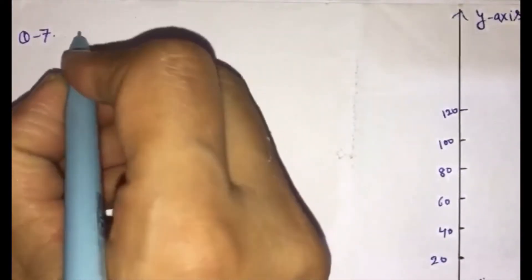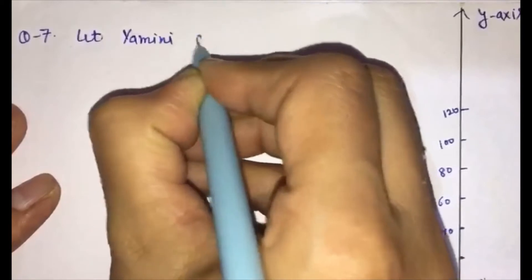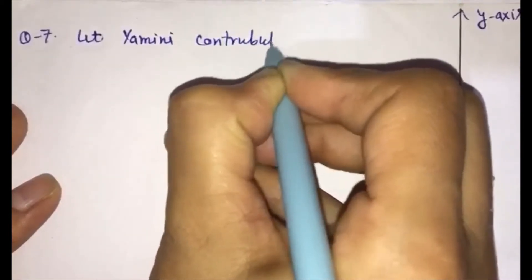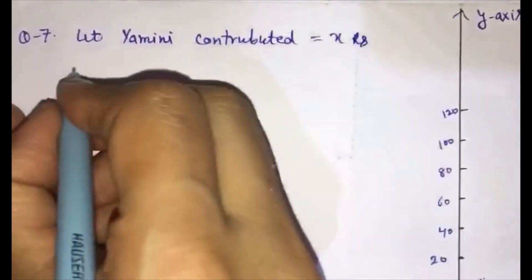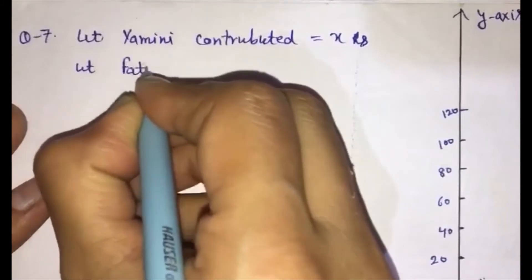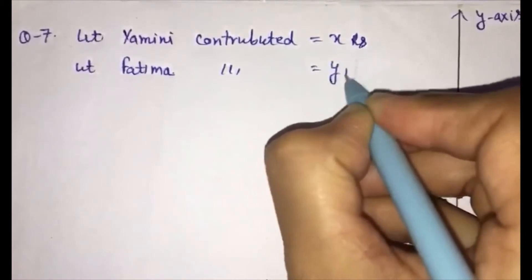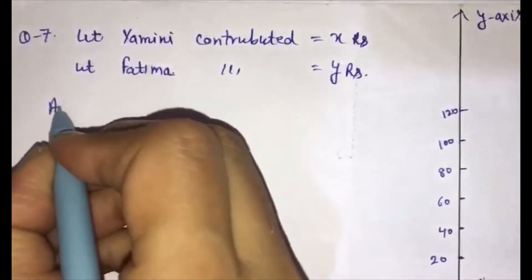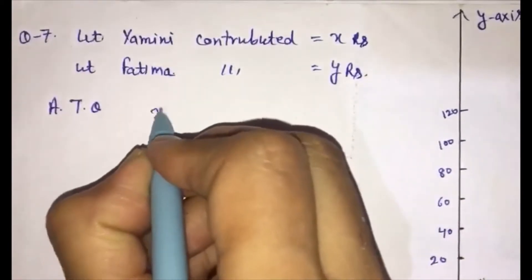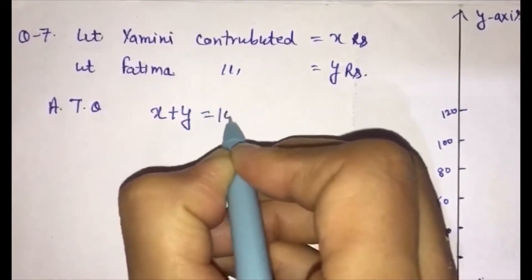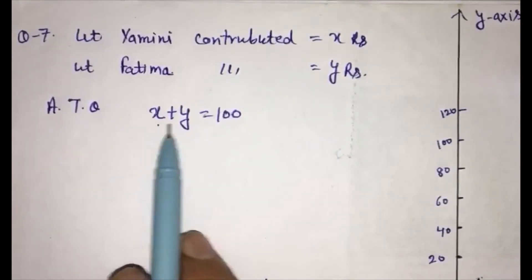Let Yamini's contribution be Rs. X, and let Fatima's contribution be Rs. Y. According to the question, both contribute equally together, so we get the linear equation: X plus Y is equal to 100. This is our linear equation in two variables, X and Y.